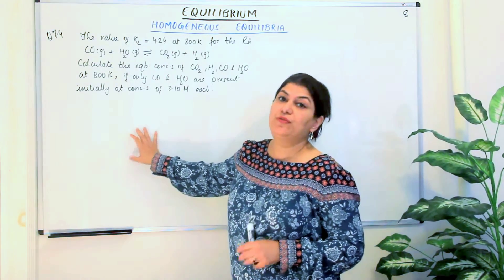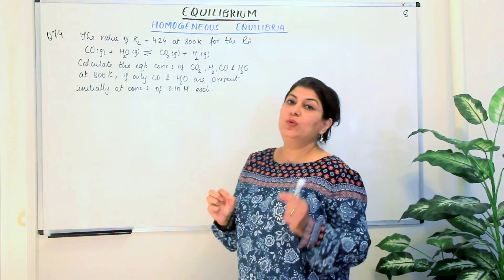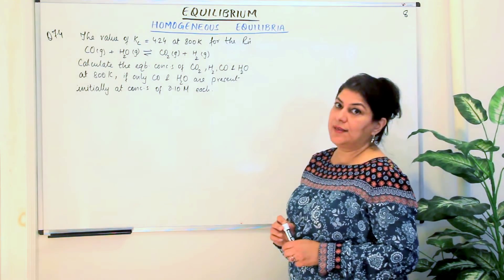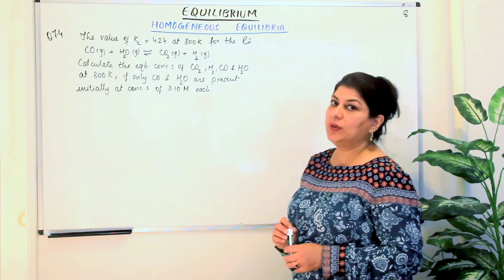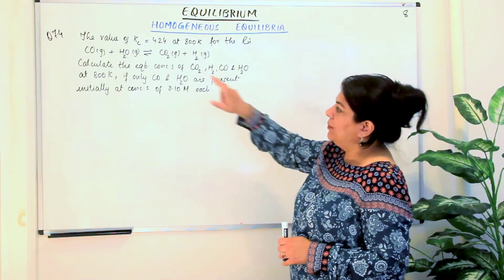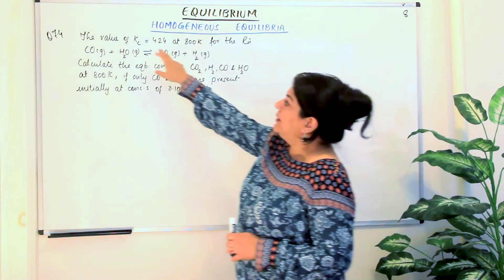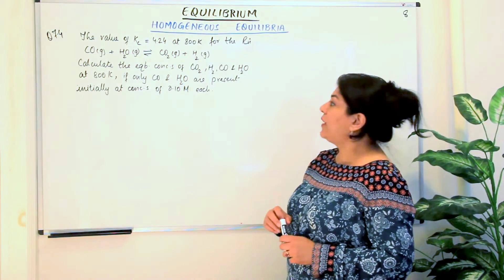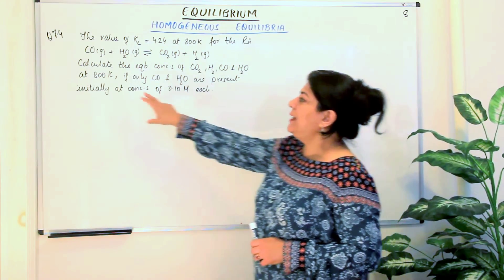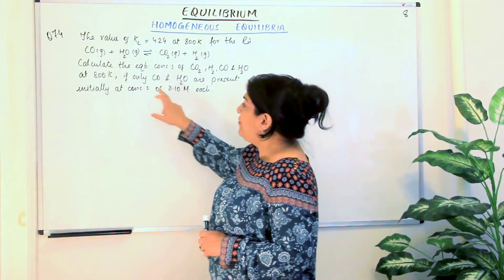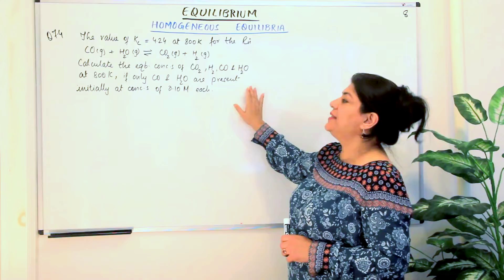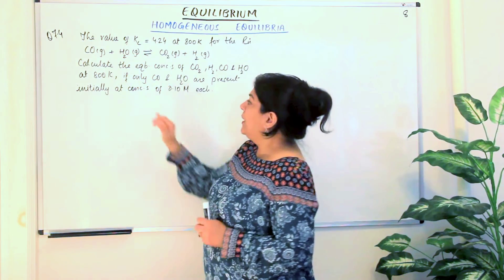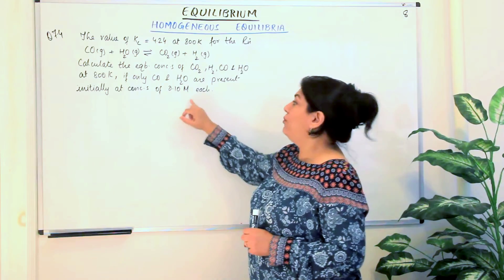Now this is question 7.4. The question is that the value of Kc is equal to 4.24 at 800 Kelvin for the reaction CO gas plus H2O gas gives you CO2 gas plus H2 gas. It's a homogeneous reaction — that's why all the physical states have been given to you. Kc is already given to you. You have to calculate the equilibrium concentrations of carbon dioxide, hydrogen, carbon monoxide, and water at 800 Kelvin. If only CO and H2O are present initially at concentrations of 0.10 molar each.